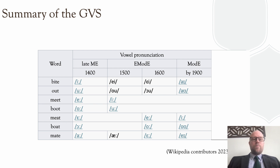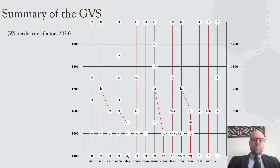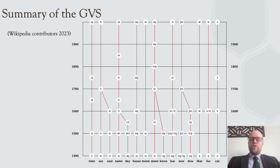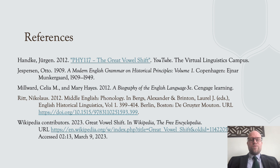You can see a summary of all the changes step by step across time. For example, 'time' started as 'teem', became 'team', then 'time', and is today 'time'. This shows how these changes happened over time, and helps explain why English spelling can be confusing — it is largely based on pronunciations from about 400 years ago. That's all the time we have today.